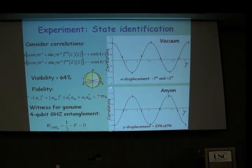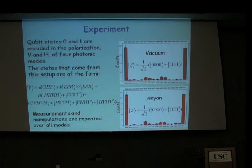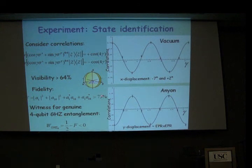Those are the states we prepared in the lab. The visibility — the difference between the two amplitudes — is 64%. The fidelity, corresponding to this visibility relative to the previous amplitudes, is 73%. Very recently we repeated the experiment and managed to improve it above 80%, though I don't have the figures for that yet.